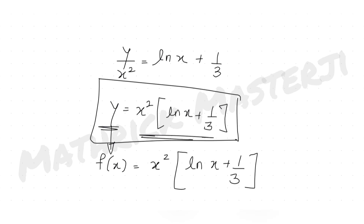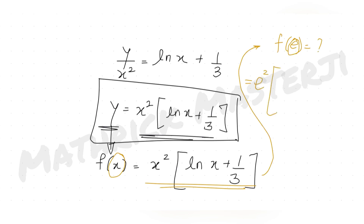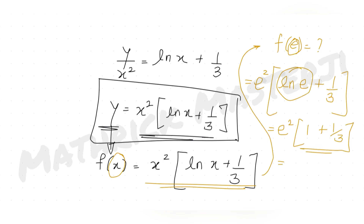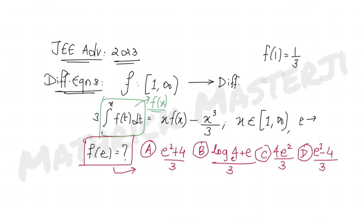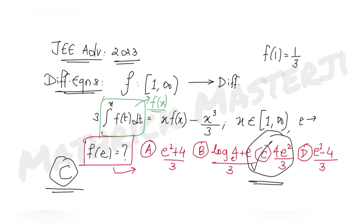Now substituting x = e to find f(e): f(e) = e²·(ln e + 1/3) = e²·(1 + 1/3) = e²·(4/3) = 4e²/3. The correct answer is option C: 4e²/3.